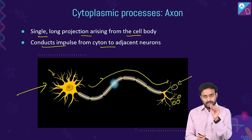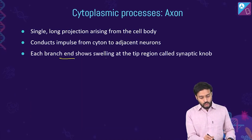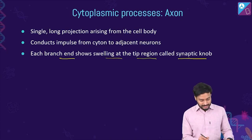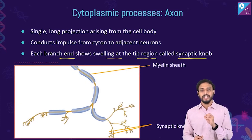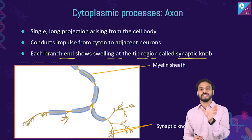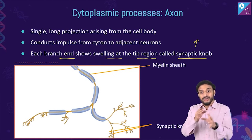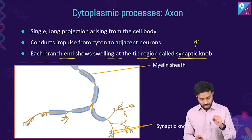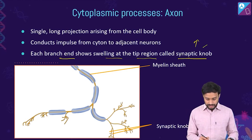At the terminal end of the axon, each branch shows a bulb-like swelling called the synaptic knob. Synaptic knobs contain chemicals called neurotransmitters, which help conduct the electrical impulse from one neuron to the dendrites of the next neuron.